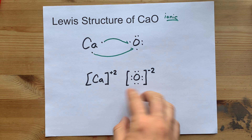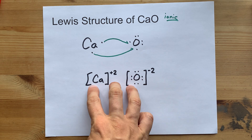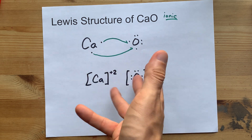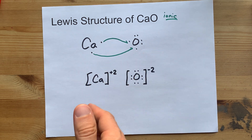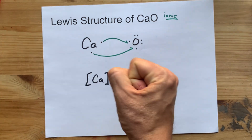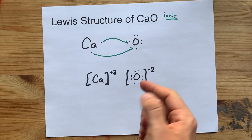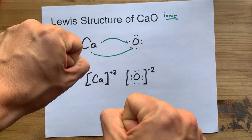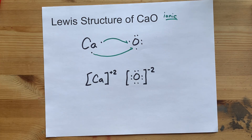That's all there is here. This is the complete Lewis structure for calcium oxide in under two minutes. Best of luck.